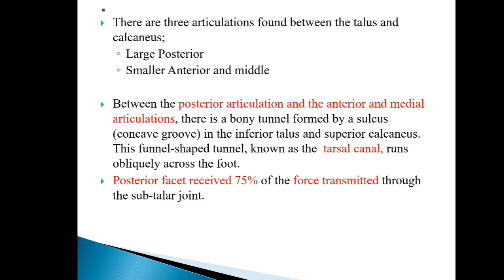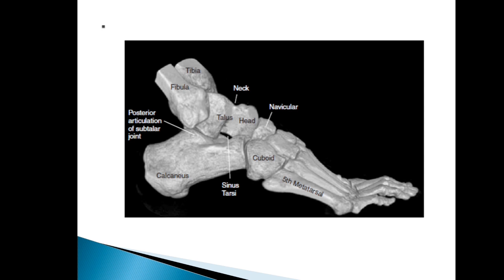There are three articulations between the talus and calcaneus: large posterior, small anterior, and middle. Between the posterior articulation and the anterior-middle articulation, there is a bony tunnel formed by a sulcus in the inferior talus and superior calcaneus. This funnel-shaped tunnel is known as the tarsal canal. In this figure, we can see the posterior articulation of the subtalar joint.